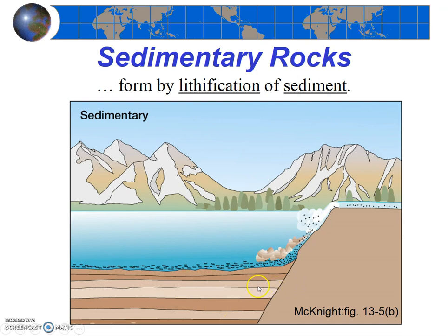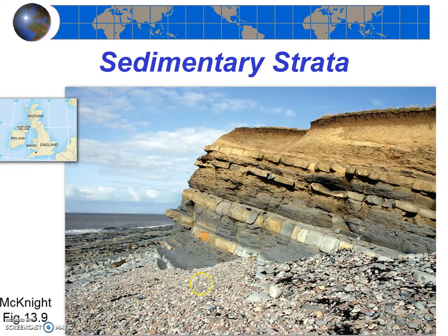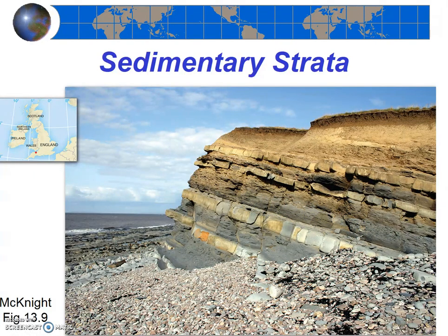Interestingly, sediments are often laid down in layers. As a result, sedimentary rocks often have layers. Here in this picture, you can see the layers of some sedimentary rocks. These were originally laid down flat as well, but for some reason they've been tilted. We'll talk more about what might cause that in the next couple weeks.